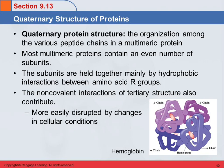And that brings us to the quaternary protein structure. This applies only to multimeric proteins because it's the organization between the different peptide chains. So if you have a monomeric protein with only one chain, it has no quaternary structure. The quaternary structure is how the different chains are attached to each other — those subunits — and they are generally held together by hydrophobic interactions between the R groups on the amino acids.